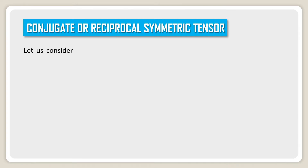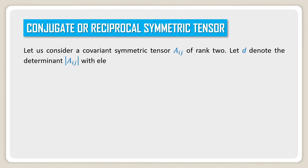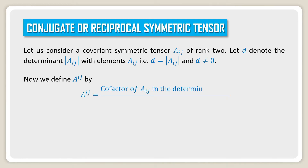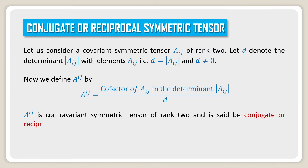Conjugate or Reciprocal Symmetric Tensors. Let us consider a covariant symmetric tensor Aij of rank 2. Let d denote the determinant of Aij, with elements Aij, that is d equal to determinant of Aij and d not equal to 0. We define the contravariant tensor A upper ij by the relation: A upper ij equals the cofactor of A lower ij in the determinant of covariant tensor Aij, divided by d. A upper ij is a contravariant symmetric tensor of rank 2 and is said to be the conjugate or reciprocal symmetric tensor of covariant tensor Aij.